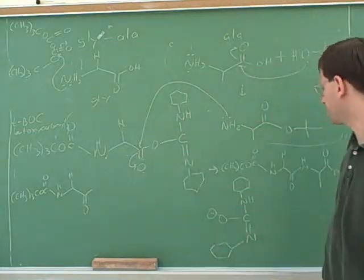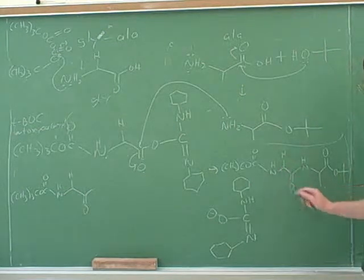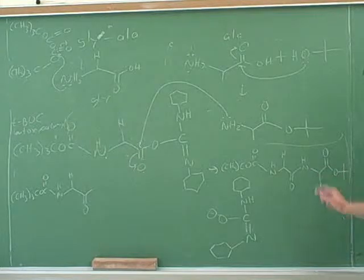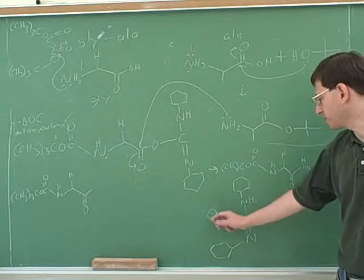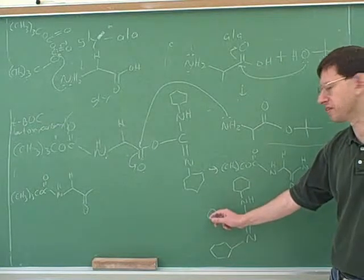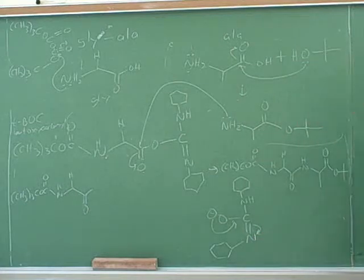So after this addition elimination reaction, now we've accomplished what we wanted. We've got the glycine attached to the alanine. And here's the leaving group that left. And as we were saying, this is an excellent leaving group because this negative charge is stabilized by resonance. There's another resonance structure where the negative charge would be on this nitrogen.